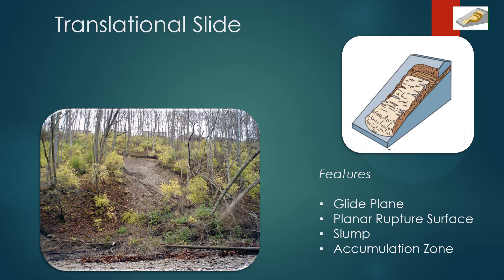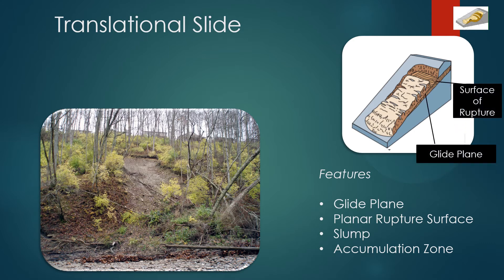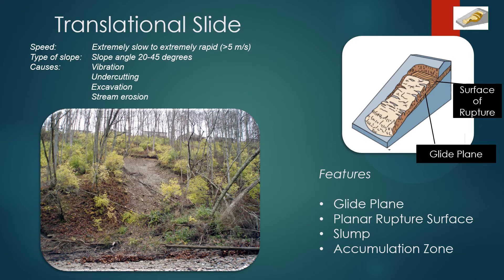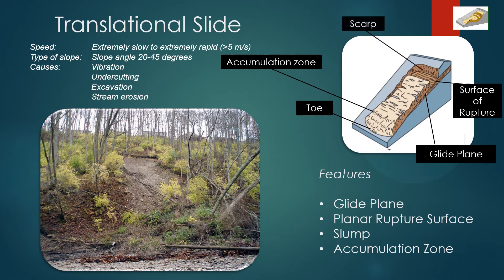A translational slide is a type of slide where the mass moves along a roughly planar surface with little rotation or backward tilting. The causes of a translational slide can be many factors: vibration, undercutting, excavation or stream erosion. The speed is extremely slow to extremely rapid, meaning more than 5 meters per second. The type of slope most commonly seen is 20 to 45 degrees.